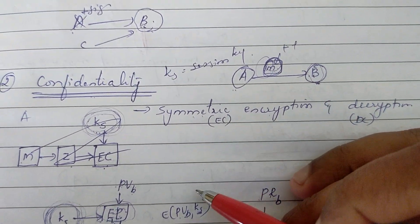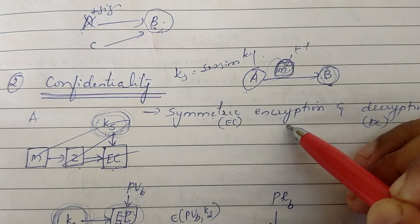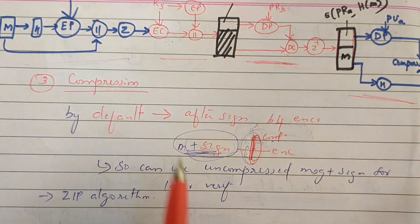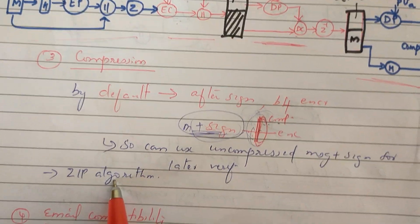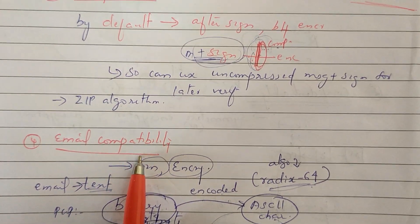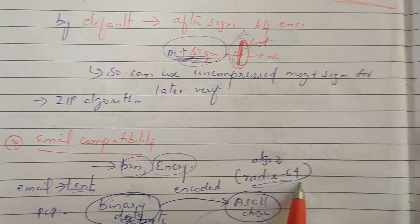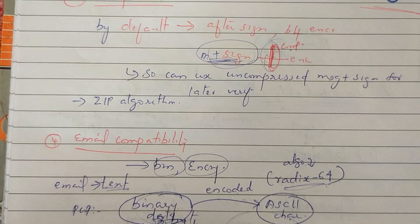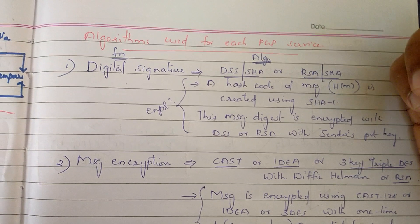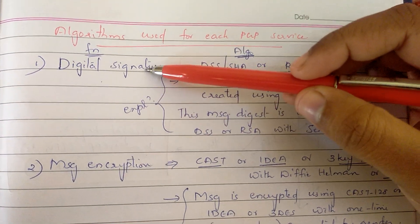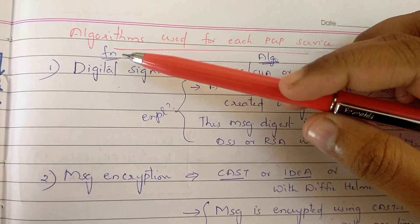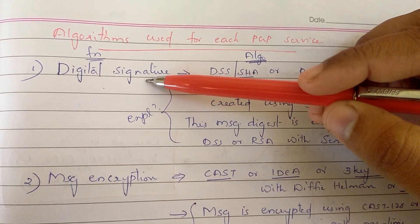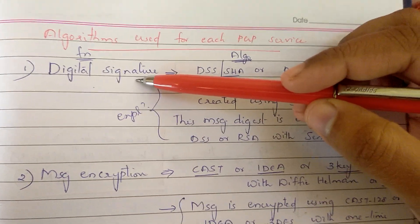For confidentiality, we use symmetric encryption. For email compatibility, we use the Radix-64 algorithm. Now I will explain again. For authentication, we use the digital signature function and the message hashcode.